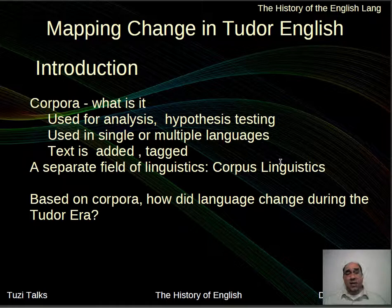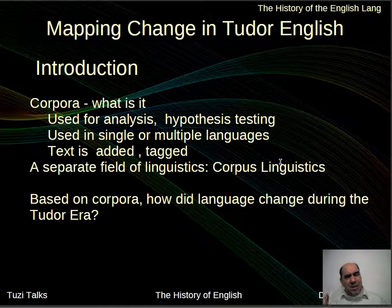A corpora is actually a collection of information — words, phrases, things that are being used — and they're cataloged not in narrative form, but more in a database form. Linguists were going around collecting this information so they could analyze and hypothesize what was being used, how it was being used, and when it was being used.